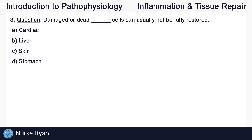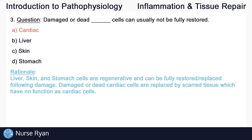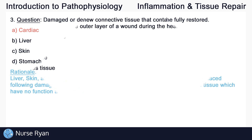Question number three: damaged or dead blank cells can usually not be fully restored. The answer here is A, cardiac. Liver, skin, and stomach cells are regenerative and can be fully restored or replaced following damage. Damaged or dead cardiac cells are replaced by scarred tissue, which have no function as cardiac cells.